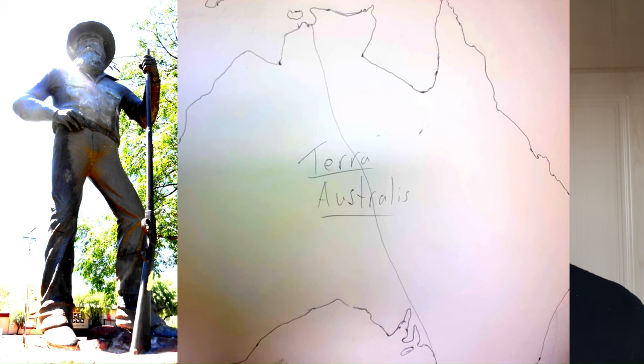1862 rolls around and John MacDowell Stewart makes his trip up to the northern parts. Then in 1869, that's when the proper settlement of Darwin is built, after a few failed attempts during that decade.